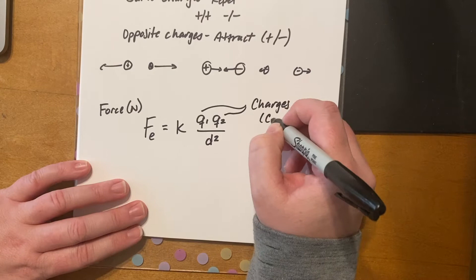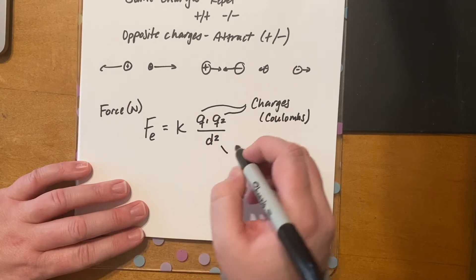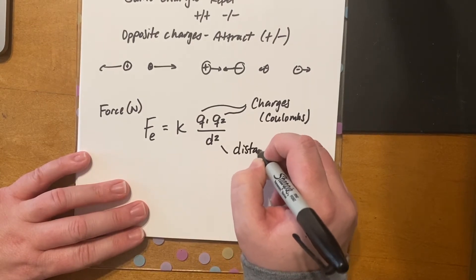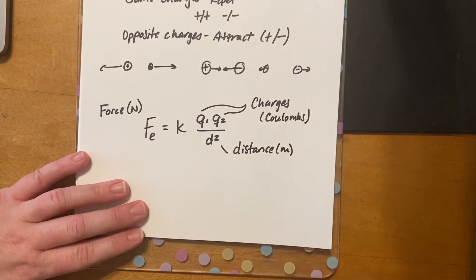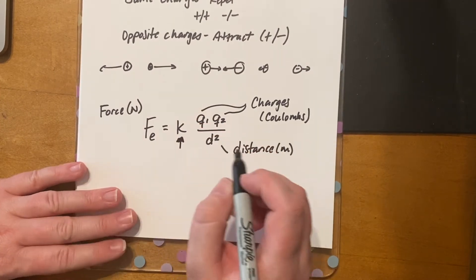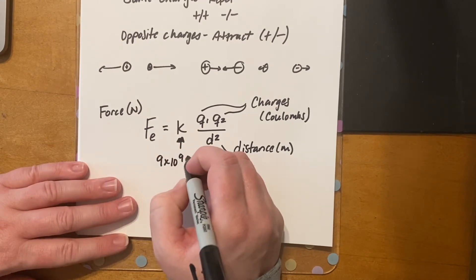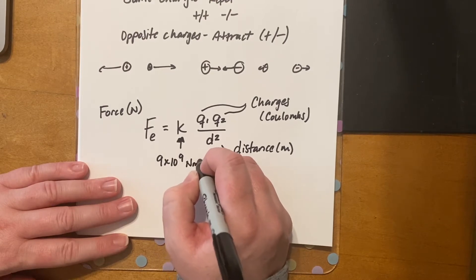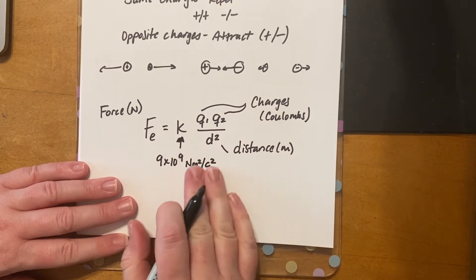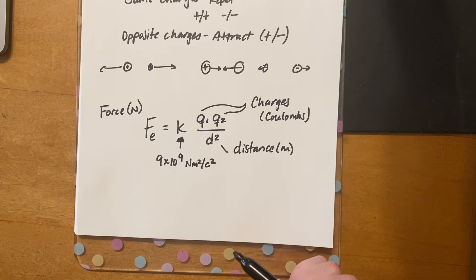The charges q are measured in coulombs, represented by the letter C. The distance between the charges is measured in meters. This is one of those cases where it actually has to be in meters — it cannot be centimeters or millimeters; if it is, you'll need to convert. As with the gravity equation, we have a constant: Coulomb's constant.